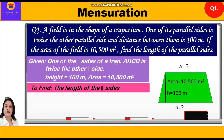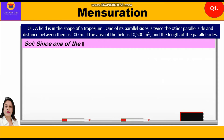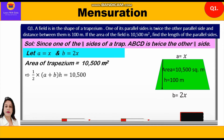We have to find A and B. Since one of the parallel sides is twice the other, let us assume A = X and B = 2X. Now area of trapezium is equal to 10,500 meters square, as given. We write: half into (A + B) into H = 10,500. Substituting the values of A, B, and H: half into (X + 2X) into 100 = 10,500.